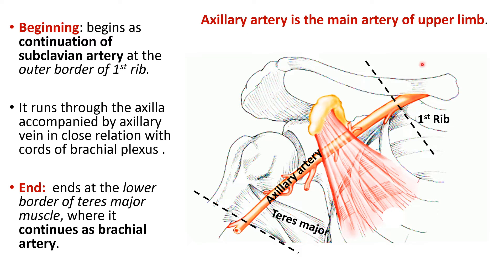The three boundaries of the cervico-axillary canal — the opening connecting the neck to the axilla — are: anteriorly the clavicle, medially the first rib, and posteriorly the upper border of the scapula. As soon as the subclavian artery enters the axilla at the outer border of the first rib, we call it the axillary artery. It runs through the axilla and at the lower border of teres major it continues as the brachial artery.